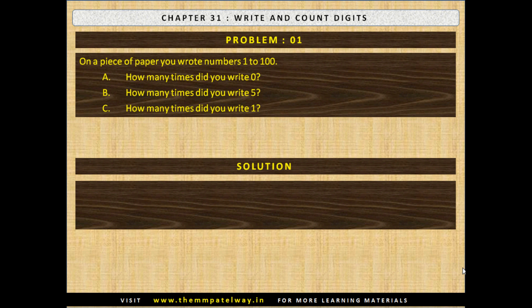Now stop the video and find the solution. The solution follows. a) Total zeros: 11. b) Fives: 20. c) Ones: 21.